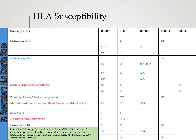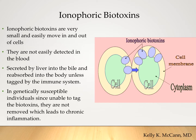This is the Rosetta Stone that Shoemaker came up with about the HLA susceptibilities, because the lab results from LabCorp do not look like the designations we talk about — so this is how you do the conversion. There is actually a website you can go to and input the information from LabCorp to figure out the HLA haplotype; if you Google 'HLA calculator,' you'll probably find it.